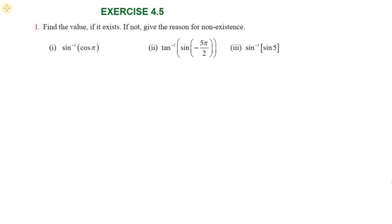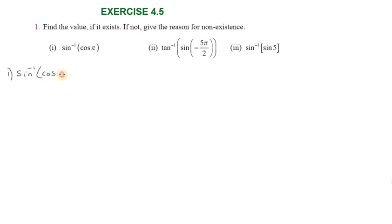Hi students, greetings from Social Education Academics. This is question number one: find the value if it exists. First is substitution: sine inverse of cos π. Cos π equals cos 180°, which gives minus one. So we need sine inverse of minus one.